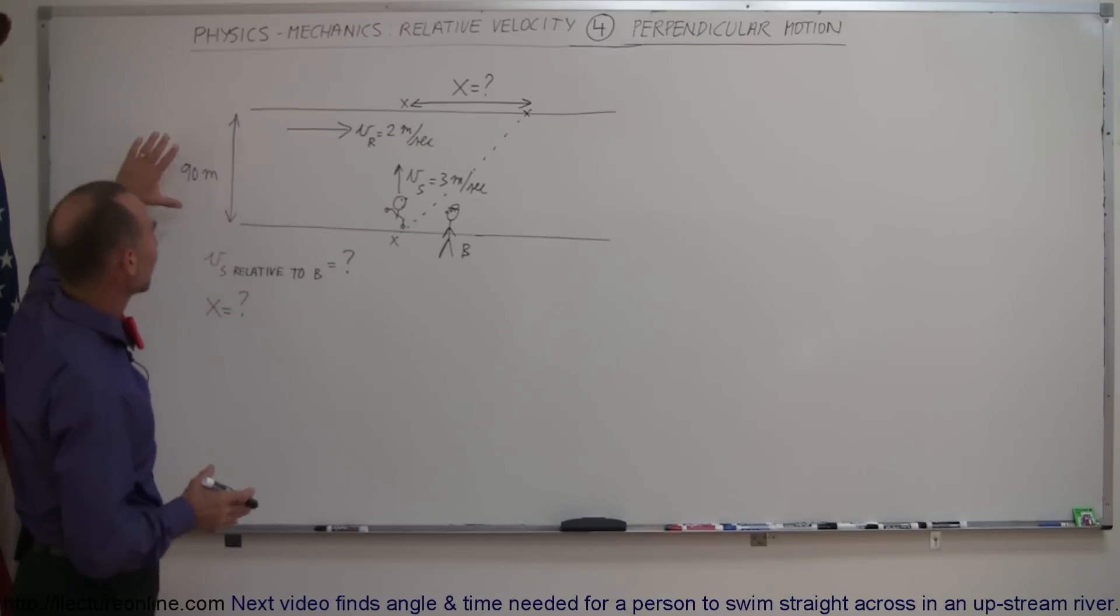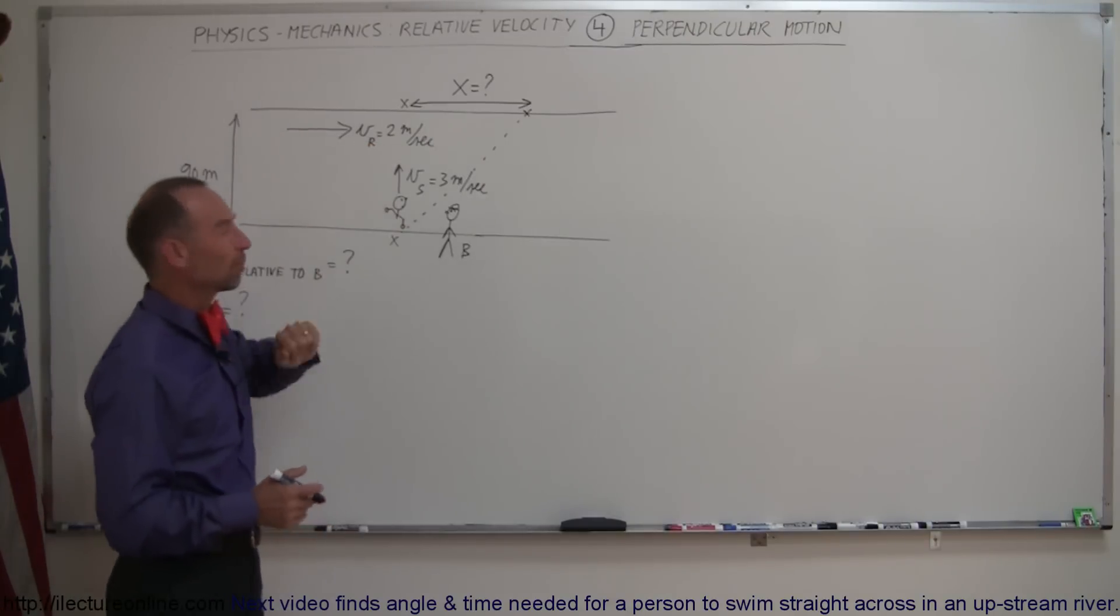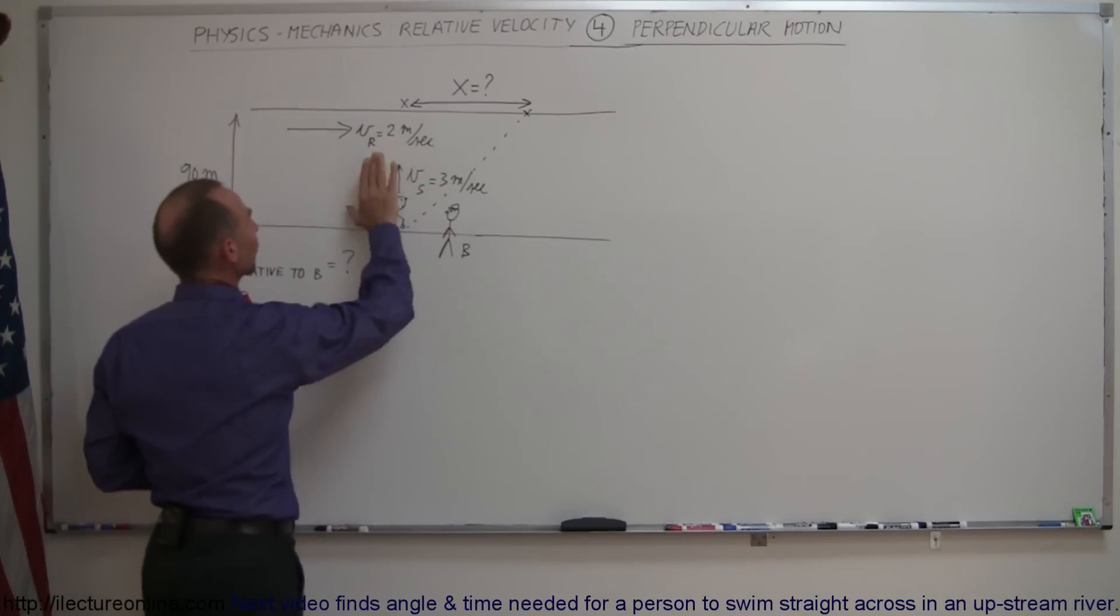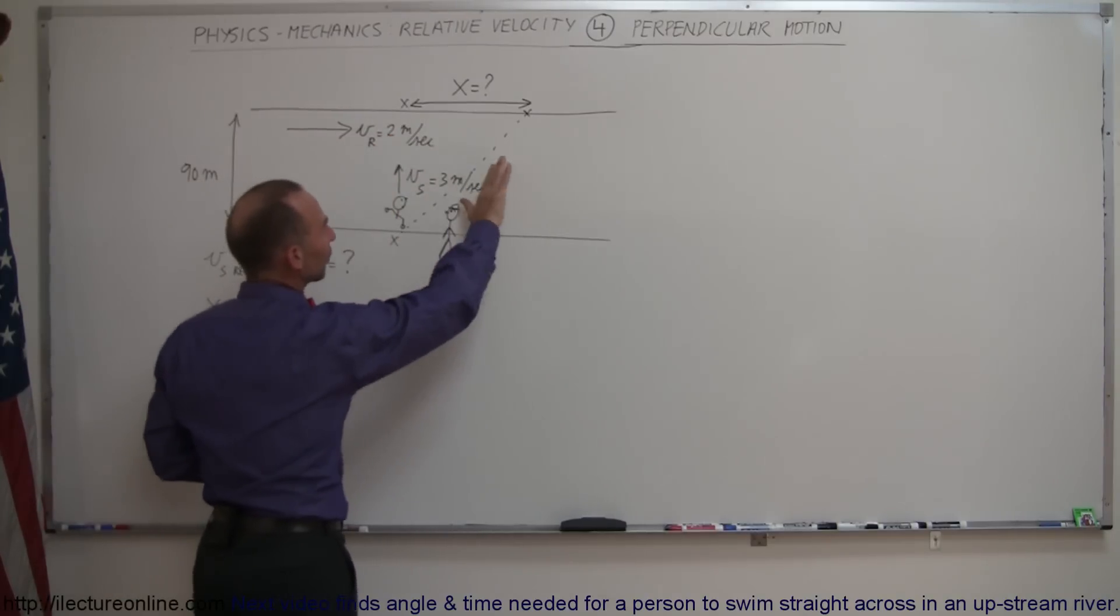In this case we have a river that's flowing to the right at 2 meters per second and we have a swimmer who's trying to swim across the river swimming straight across. The current is flowing to the right.